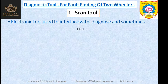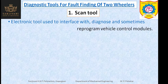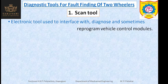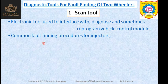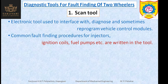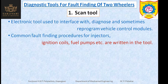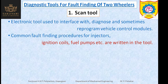The scan tool is an electronic tool with which we can interface, diagnose, or even sometimes reprogram the vehicle control modules. The vehicle control modules can be diagnosed, interfaced with, or if required reprogrammed with the scan tool. We adopt common fault finding procedures specially for the injectors. Common fault finding procedures for the fuel injectors, ignition coil, fuel pump, etc. are also stored in the scan tool.